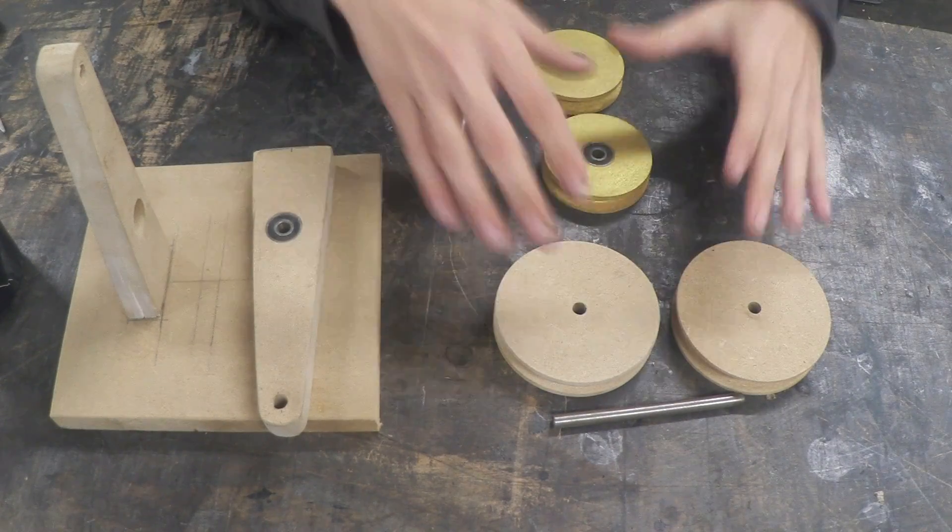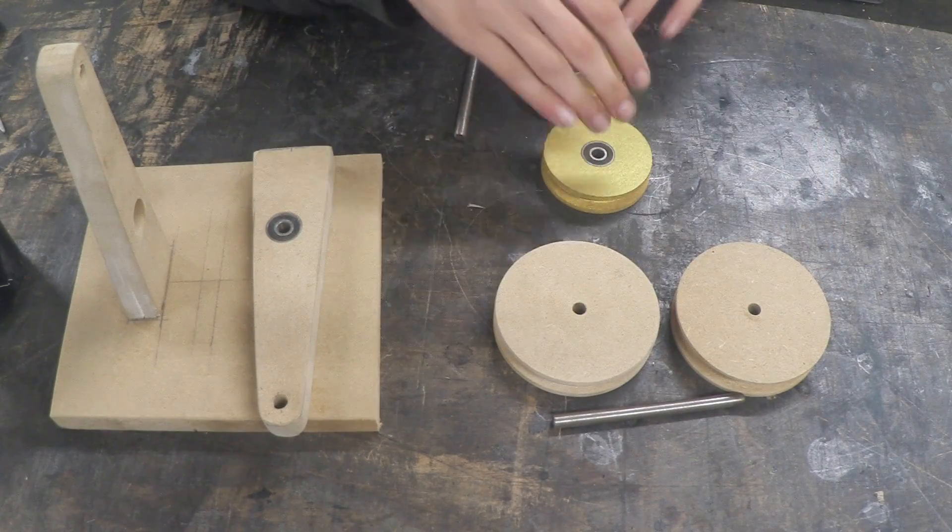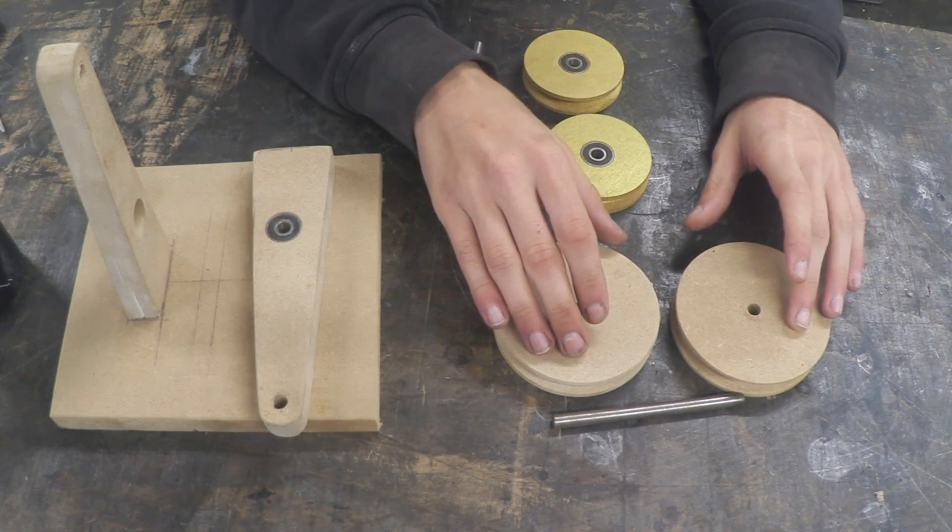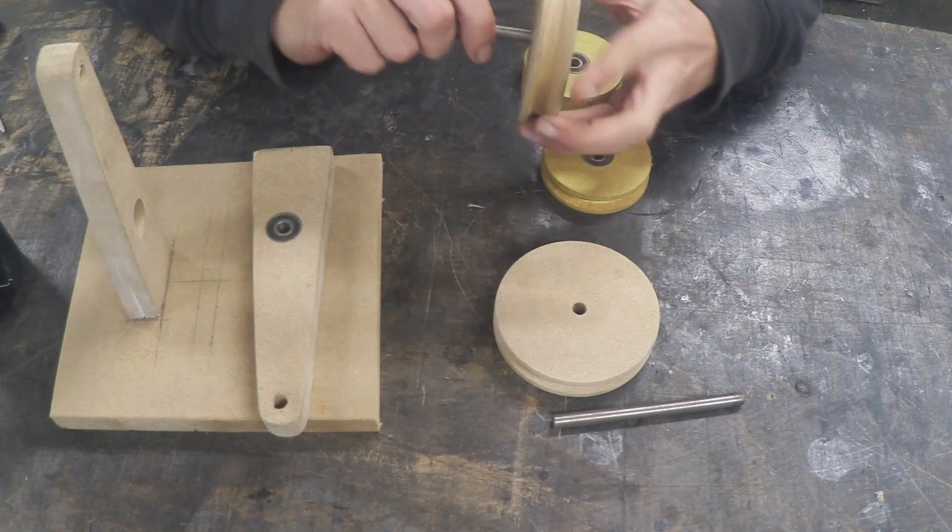So here are all the bits. Here are the pulleys, we've got two large and we've got two small. The small ones have skater bearings in them and the large ones don't. So we put the large ones on an axle like so.